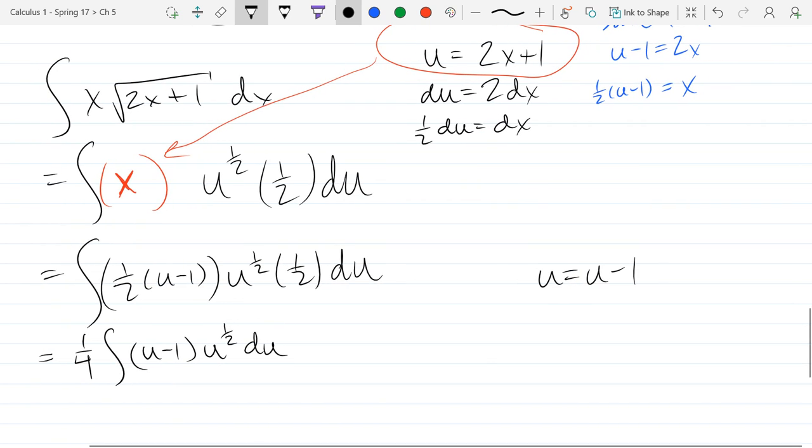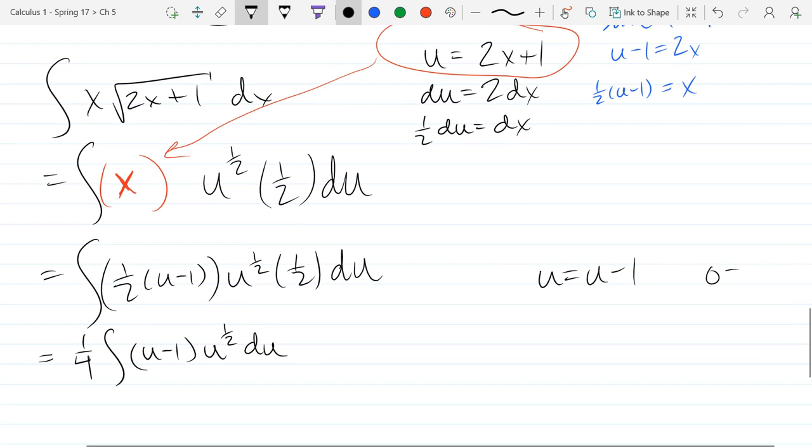So if u equals u minus one, then I could... if I did some algebra, if I subtract u on both sides, that means zero equals negative one. So that's a really bad substitution to make. I mean, this right here, this doesn't really make any sense anyways. How could u equal itself minus one?